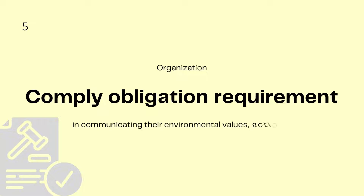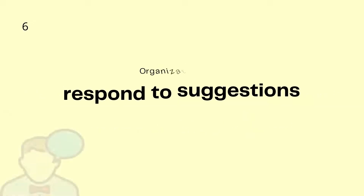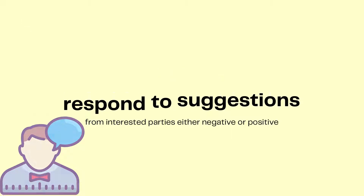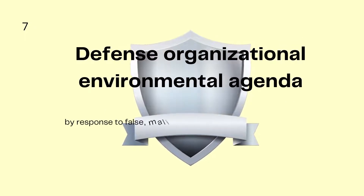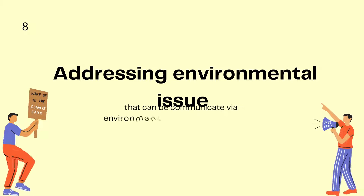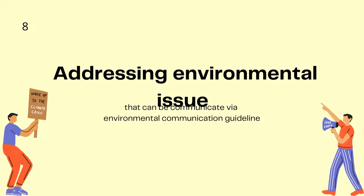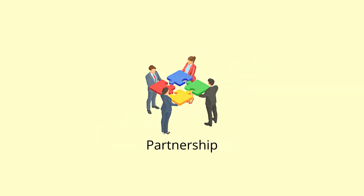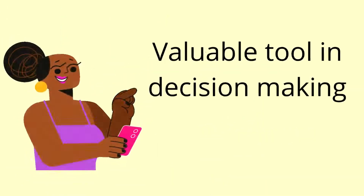Further motivations include the need to comply with obligations and requirements in communicating environmental values, actions, and performance. A good organization also needs to respond to suggestions from interested parties, whether negative or positive, in an ethical manner. Additionally, organizations may need to defend their environmental agendas by responding to malicious accusations of environmental impropriety. Finally, the ever-increasing importance of addressing environmental issues can be communicated via environmental communication guidelines. These motivations base the process of sharing information to forge trust, credibility, and partnership, and to increase awareness and support valuable decision making.